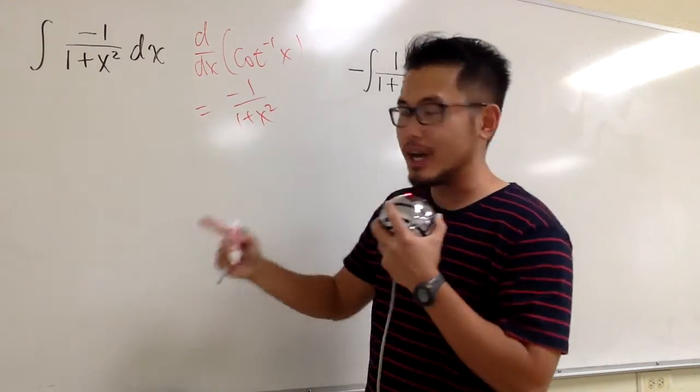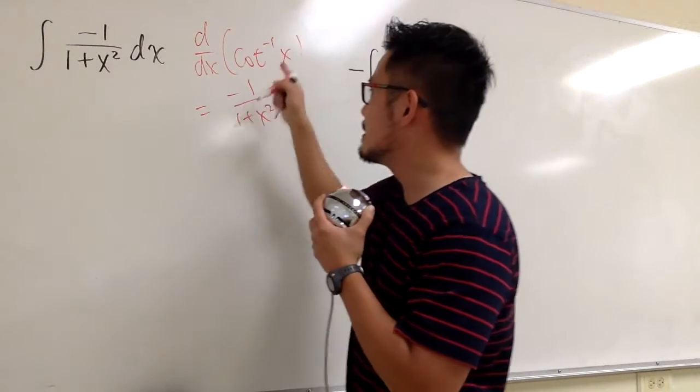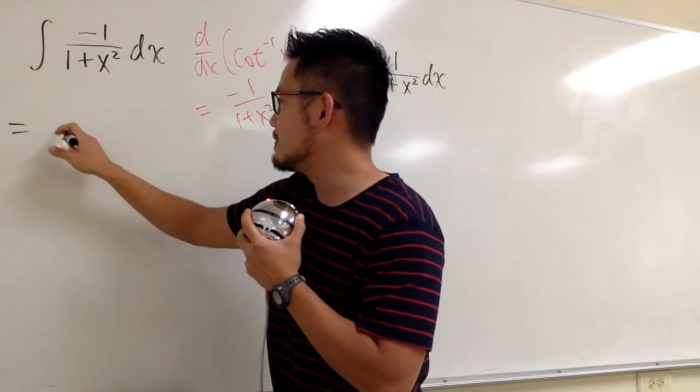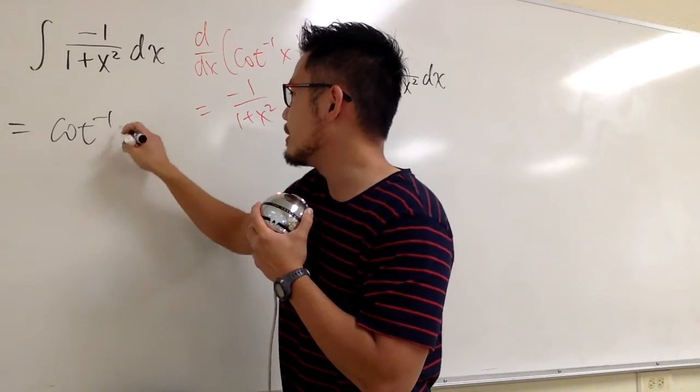So what does that tell me? That will tell me this right here is that the answer for this, the first one, is inverse cotangent x. I'm done.